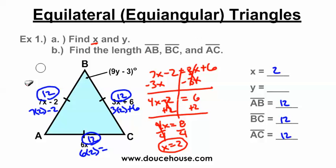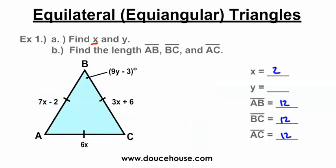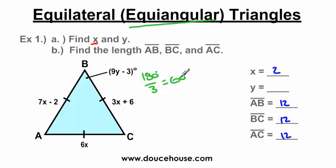Now my goal is to solve for Y. We know this is an equilateral triangle, and equilateral triangles are also equiangular. All the angles have to equal 180 degrees, so 180 divided by 3 gives us 60 degrees. All these angles are 60 degrees — it doesn't matter how big or small the equilateral triangle is, it's always going to be 60 degrees in all the angles.